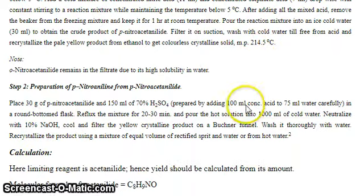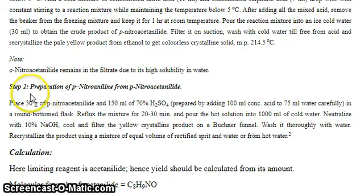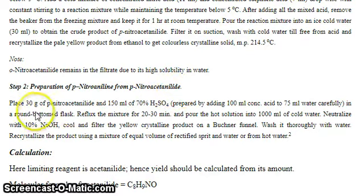Recrystallize the pale yellow product from ethanol to get a colorless crystalline solid. Check the melting point: 214.5°C. Note that orthonitroacetanilide remains in the filtrate due to its high solubility in water. Now for step two, the preparation of paranitroaniline from paranitroacetanilide.